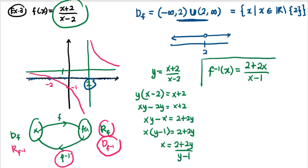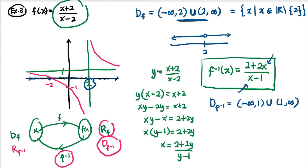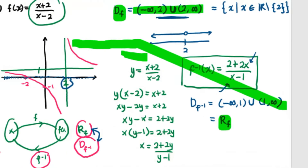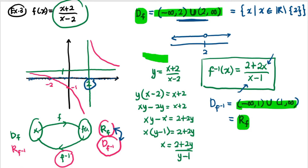The domain of f⁻¹ is any number except x = 1, since the denominator cannot be zero. So the domain of f⁻¹ is (-∞, 1) ∪ (1, ∞). Since the range of f equals the domain of f⁻¹, the range of f is also all real numbers except 1.